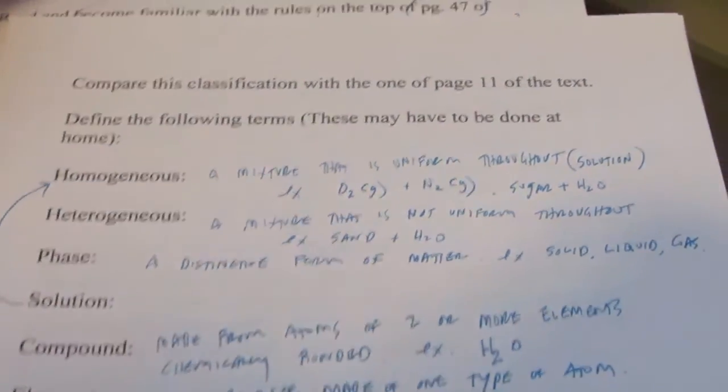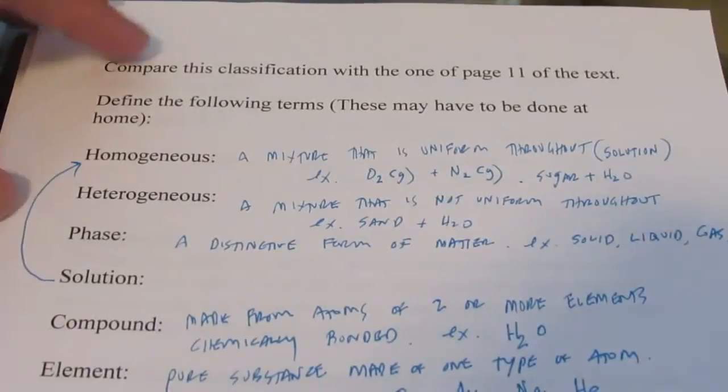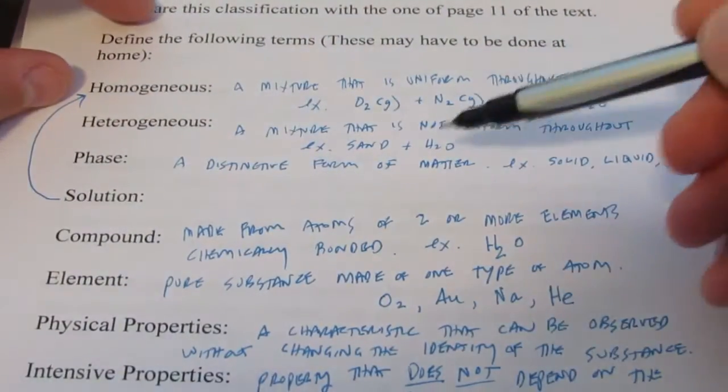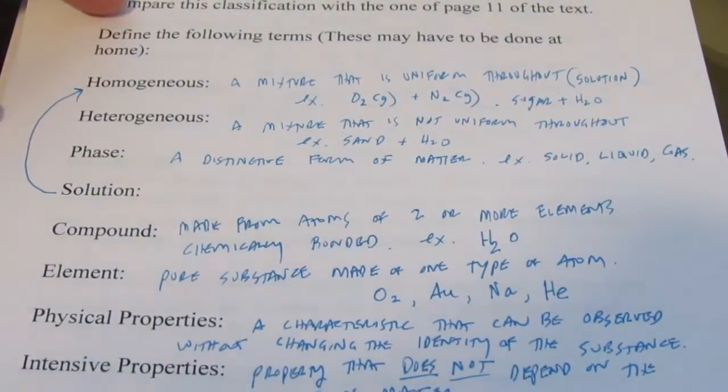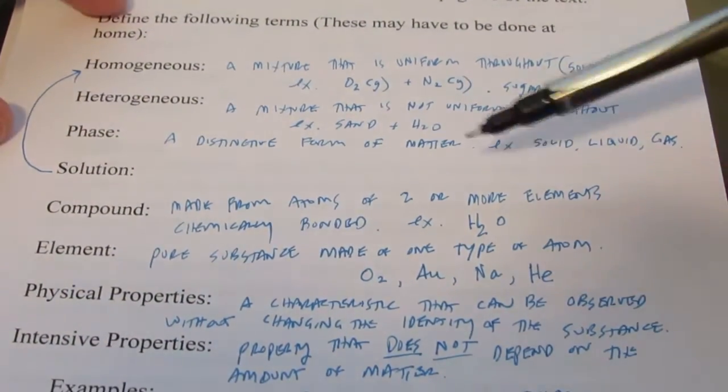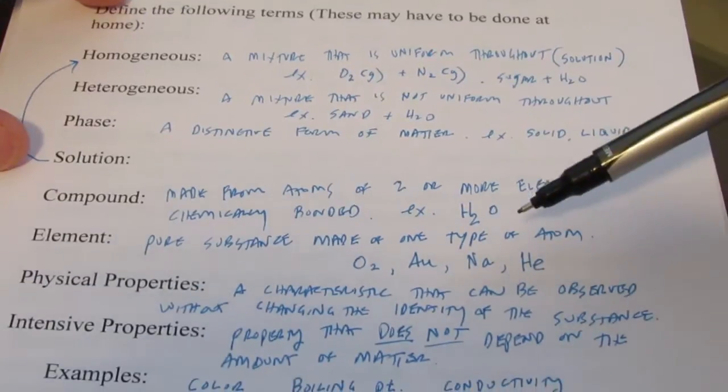So we just defined homogenous, heterogeneous. Talked a little bit about phases. Just remember that's a distinctive form of matter. For example, solid, liquid, or gas. We talked about compounds. We just talked about elements. But then we talked about properties, as you recall. And there are physical properties and chemical properties.